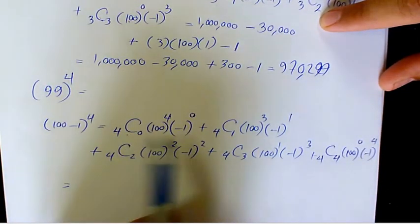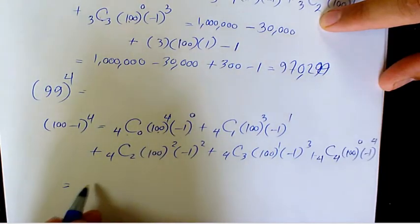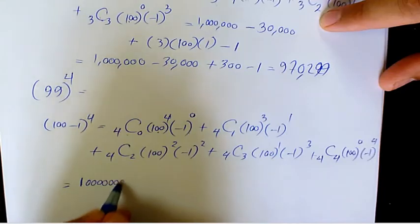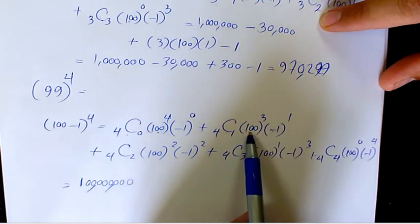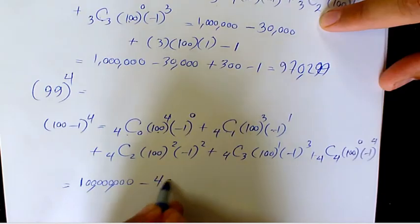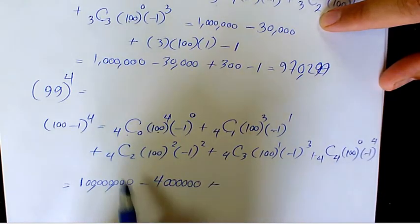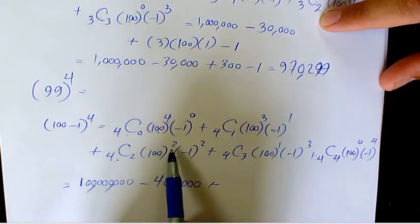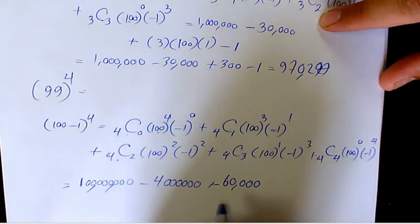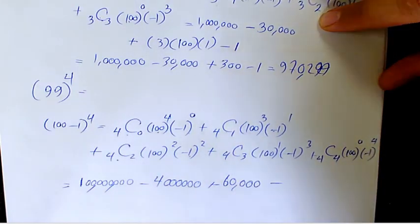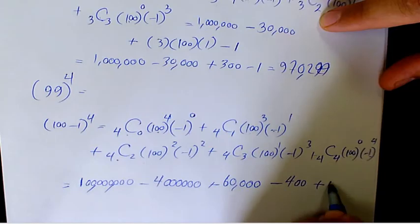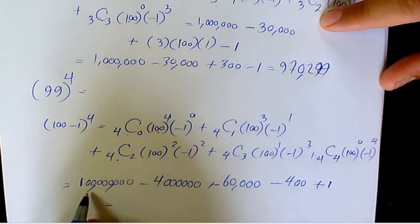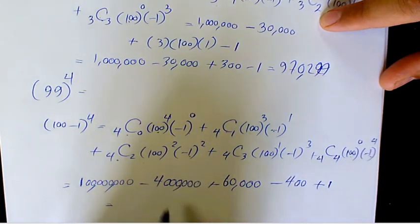Evaluating each term: the first coefficient is 1, so we have 100 to the power of 4, which is 100,000,000. The next term is negative 4 times 1,000,000, giving negative 4,000,000. Then 6 times 10,000 gives 60,000. Next is negative 4 times 100, giving negative 400. Finally, 1 times 1 times 1 gives positive 1. So we have 100,000,000 minus 4,000,000 plus 60,000 minus 400 plus 1.